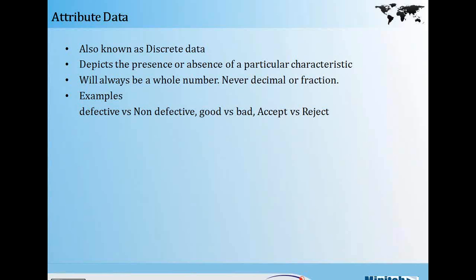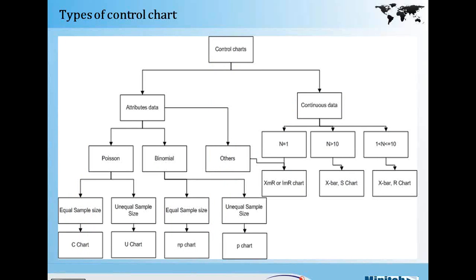Based on the data types, the type of control chart also varies. We would see in the next slide what types of control charts exist, which to select when, and what pitfalls arise from choosing an inappropriate chart. Broadly, control charts are classified based on attribute data and continuous data. For attribute data, it follows different types of distributions — it could be a Poisson distribution or a binomial distribution — and we deal with data based on what it represents.